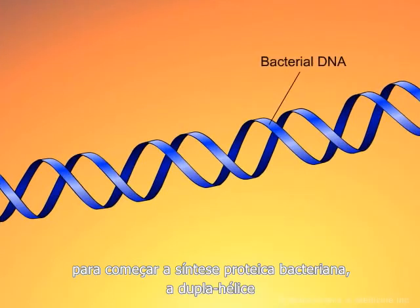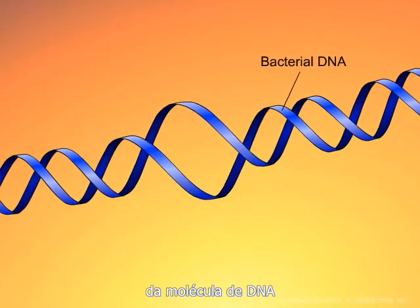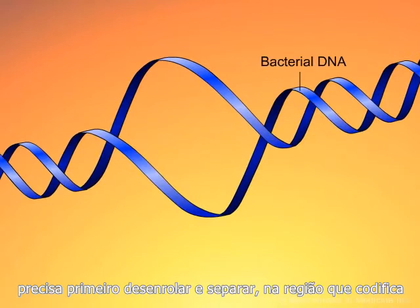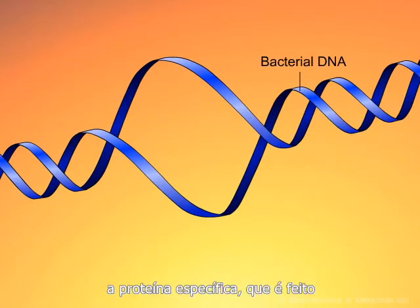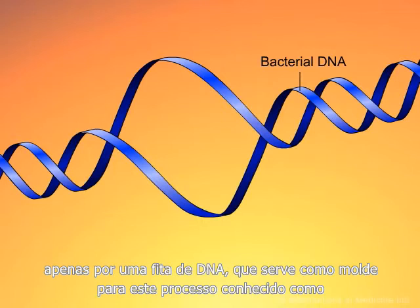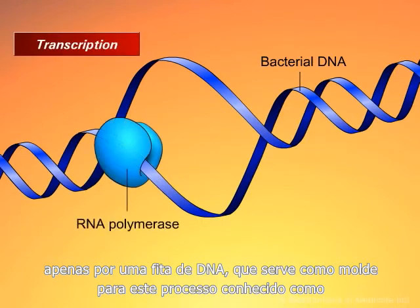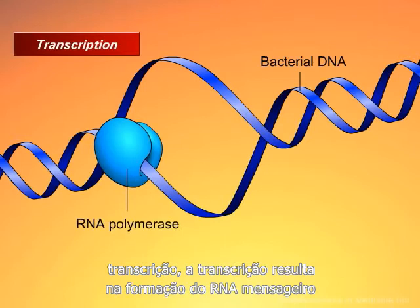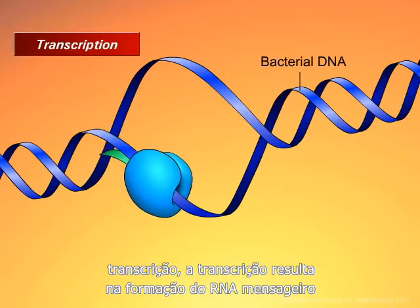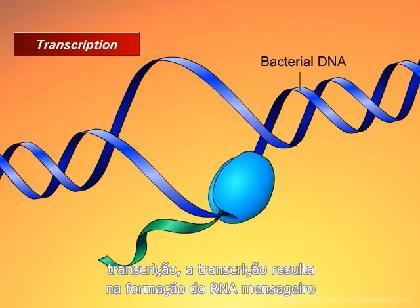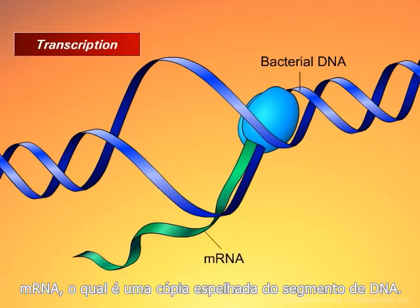In order for the bacteria to begin protein synthesis, the double-stranded DNA molecule must first unwind and separate in the region which codes for the specific protein that is to be made. Only one strand of the DNA serves as a template for this process known as transcription. Transcription results in the formation of messenger RNA, which is a mirror copy of the DNA segment.